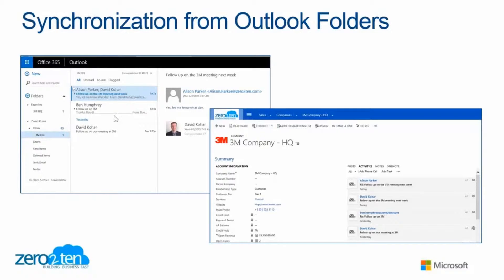You'll see that I've created a folder called 3M HQ in my folder structure inside of Outlook. I've started dragging emails into that folder, and that folder now synchronizes with this account record inside of CRM. For example, the reply from Allison to me is actually tracked here inside of CRM as an activity — and the way I did that was I simply dragged it to that folder.